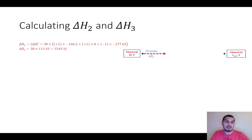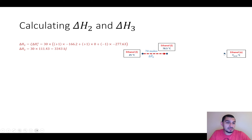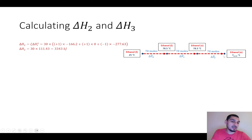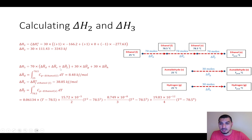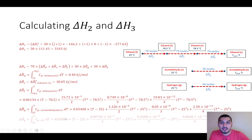For delta H3, we start with ethanol at 25°C and bring it to the unknown product temperature T. It goes through three steps in reverse: heat liquid to saturated liquid, then to saturated vapor at the boiling point, then heat vapor to the product temperature T. For acetaldehyde it's vapor to vapor, and for hydrogen it's also vapor to vapor. The integrals for the product components are functions of the unknown product temperature T.